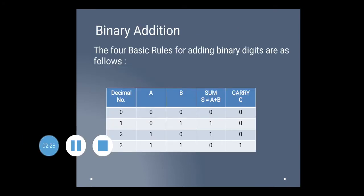We will start with binary addition. There are 4 basic rules for binary addition — it is not like decimal addition. In the table, two single-digit numbers are shown: the first number is A and the second is B. For any addition you need 2 numbers, so here single bits are used. Whatever result you get is called the sum, so A plus B equals sum.